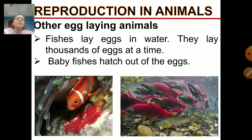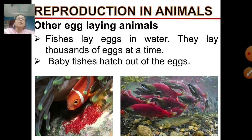In part 4, we discussed about the animals which reproduce by laying eggs. In that, we discussed about insects. We also revised the life cycles of insects like cockroach and butterfly. We also did some activity based on that.